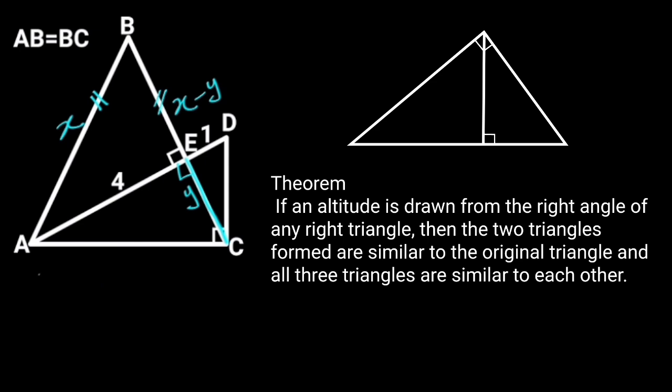It states that if an altitude is drawn from the right angle of any right triangle, then the two triangles formed are similar to the original triangle, and all three triangles are similar to each other. From this theorem, it follows that